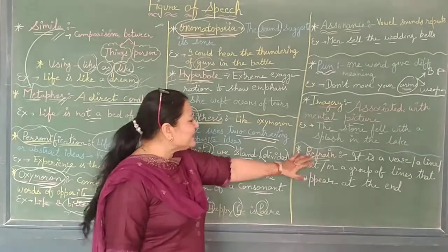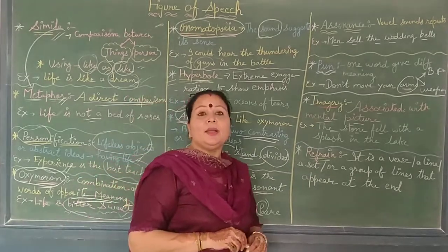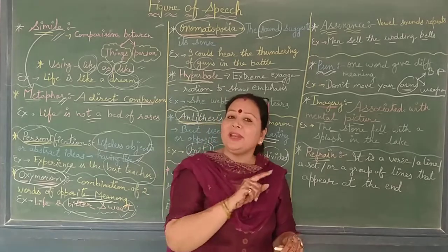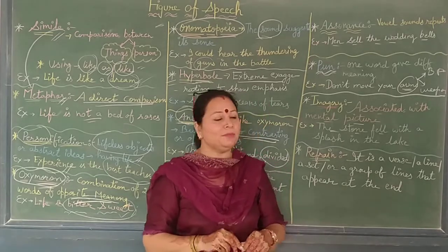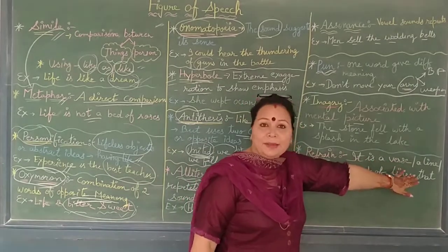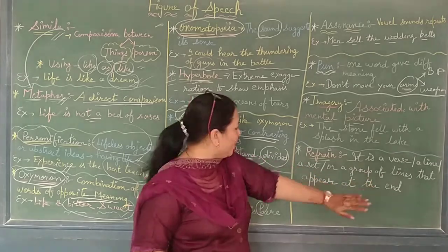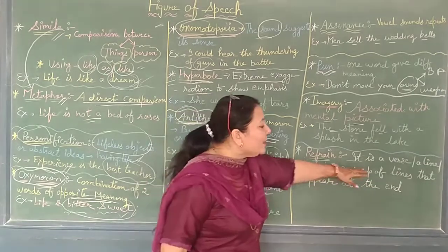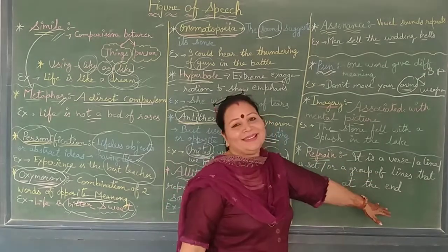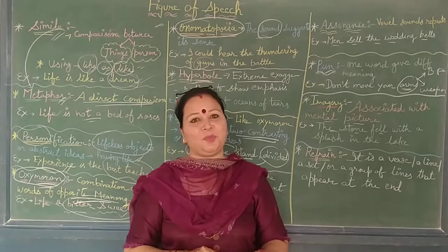Let's move to the last figure of speech: refrain. Refrain is a word, line, or group of lines that keeps on repeating at the end of every stanza in a poem. For example, from the poem 'The Brook,' the line 'Men may come and men may go' keeps repeating. It can be a single word, a line, or a combination of two or three lines that appears at the end of the poem. This was the topic of figure of speech for today.